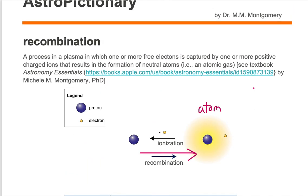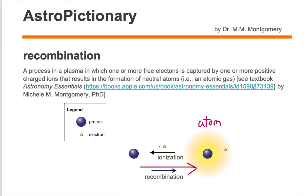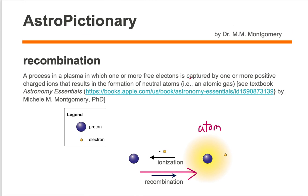Recombination is a process in a plasma in which one or more free electrons is captured by one or more positively charged ions, resulting in the formation of a neutral atom.